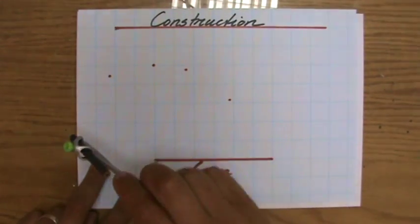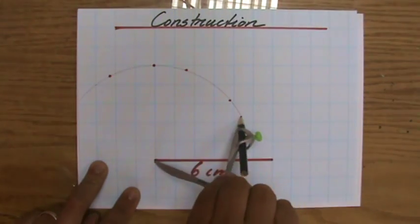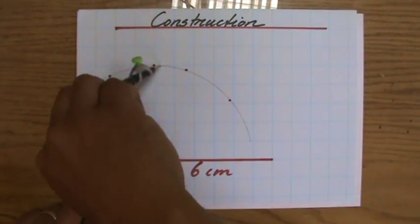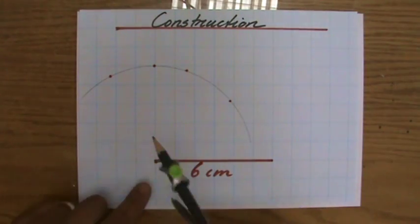5 centimeters. And I'm going to stand, I put the needle in my corner, and I'm going to draw that part of the circle, that arc, that part of the circumference, 5 centimeters away from that point.